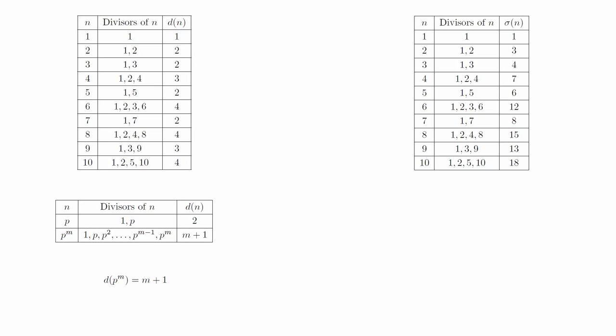The second arithmetic function is the sum of divisors of n, which is denoted sigma. Since we already have the divisors listed, all we need to do is add them up to get the values of sigma.